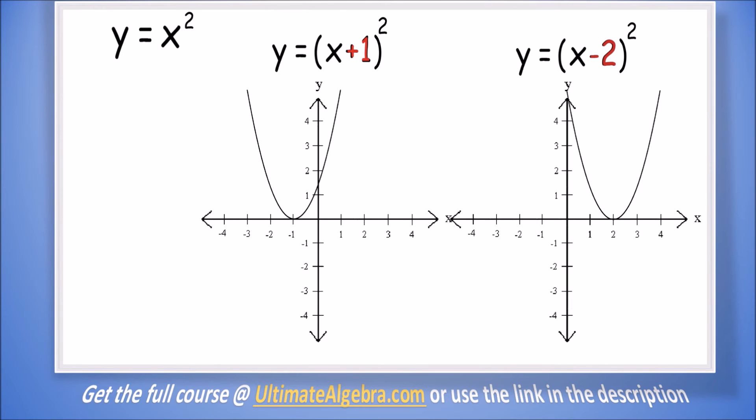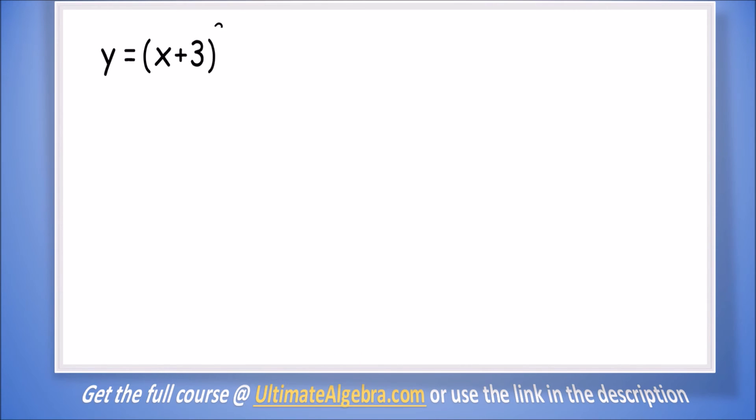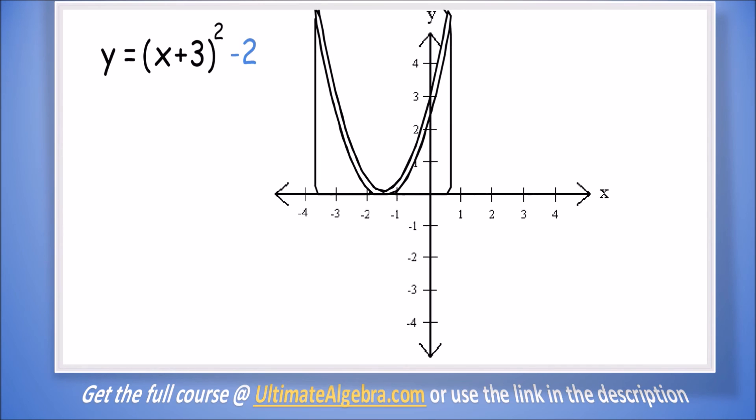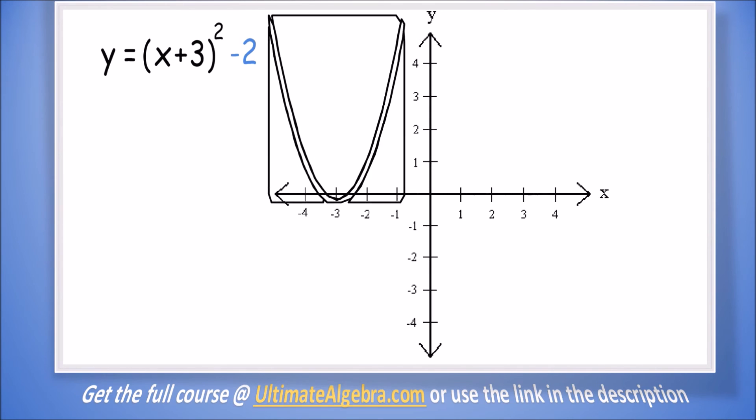We know what to do. The shift will look like this. It is possible to have multiple shifts in one graph. Example: y = (x + 3)² - 2. Let's bring our basic parabola. We can shift the graph 3 to the left first because of the +3, then shift it 2 down because of the -2. So this is the parabola for this quadratic equation.